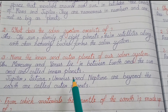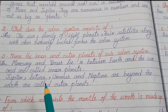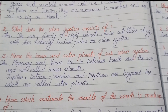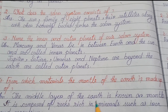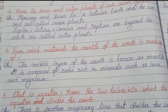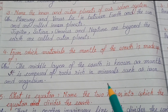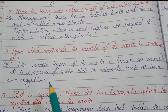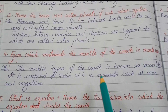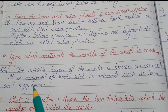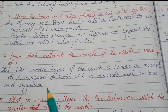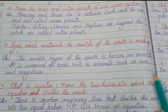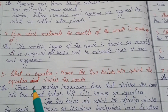Jupiter, Saturn, Uranus, and Neptune are beyond the earth and are called outer planets. Number four: From which materials is the mantle of the earth made up of? The middle layer of the earth is known as the mantle. It is composed of rocks rich in minerals such as iron and magnesium.